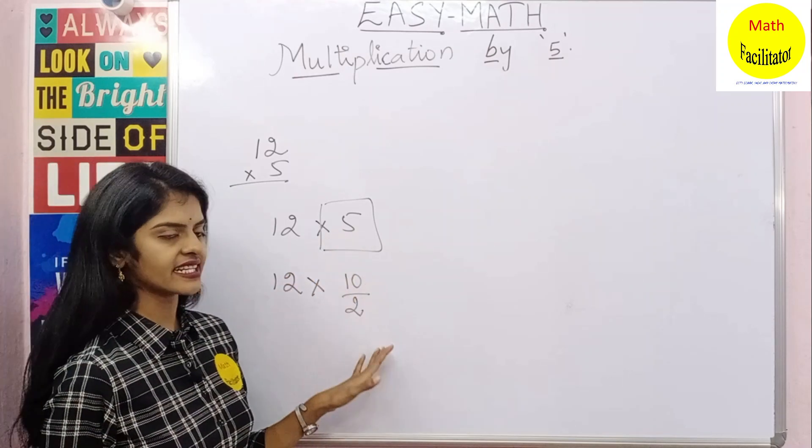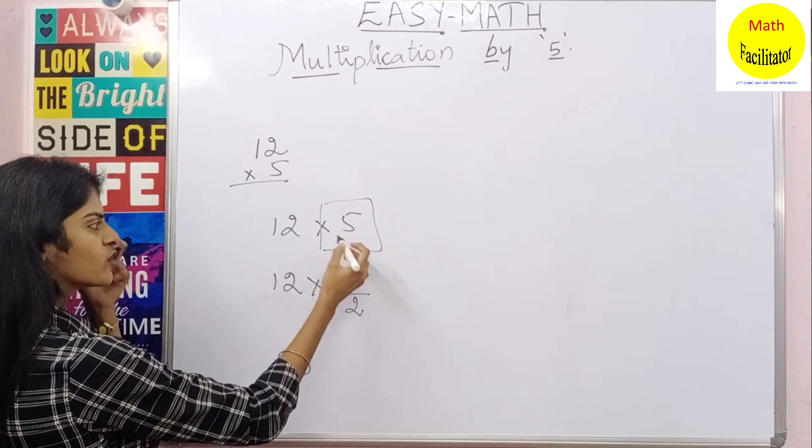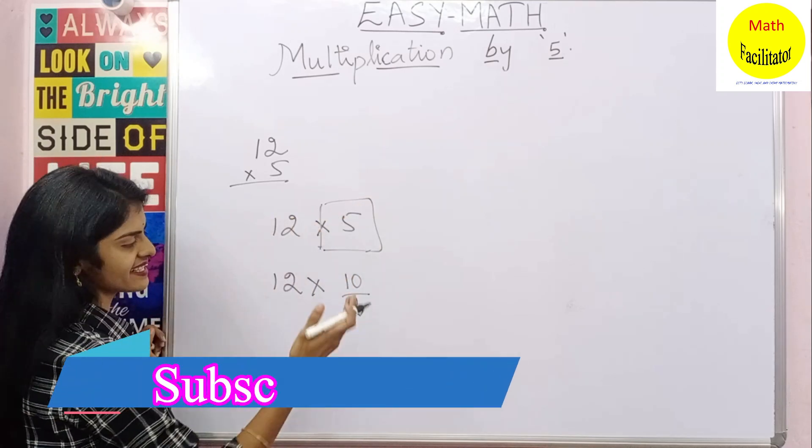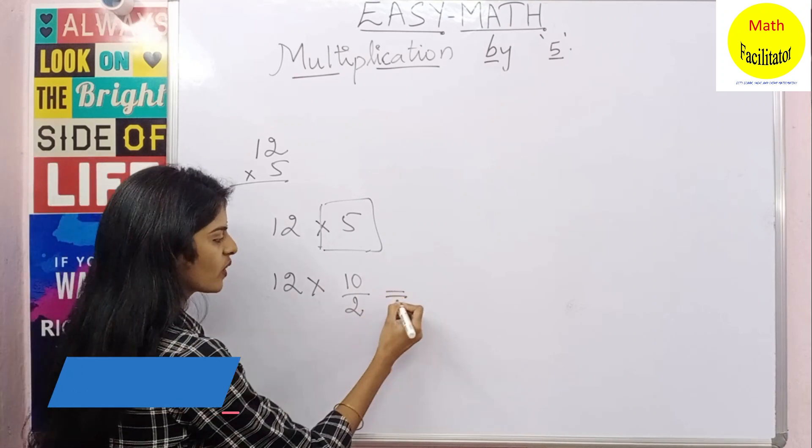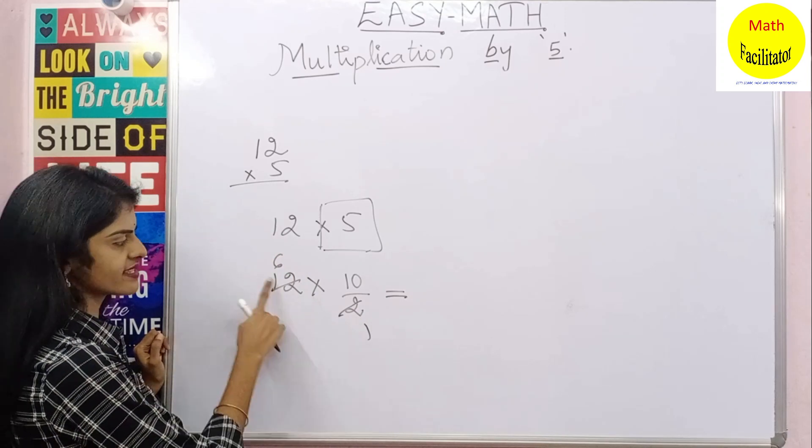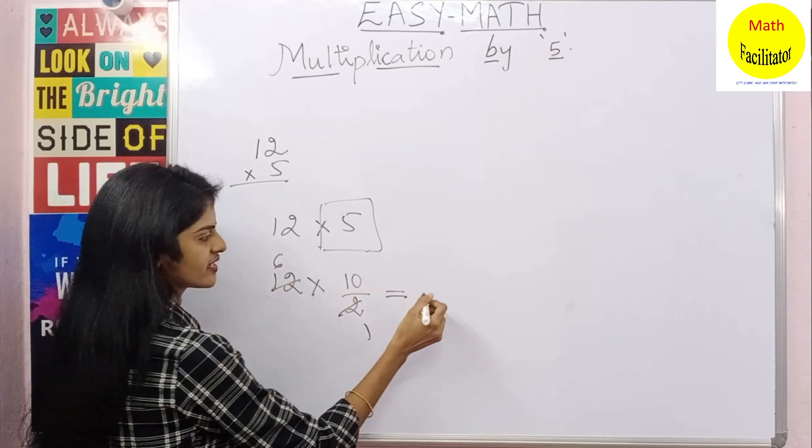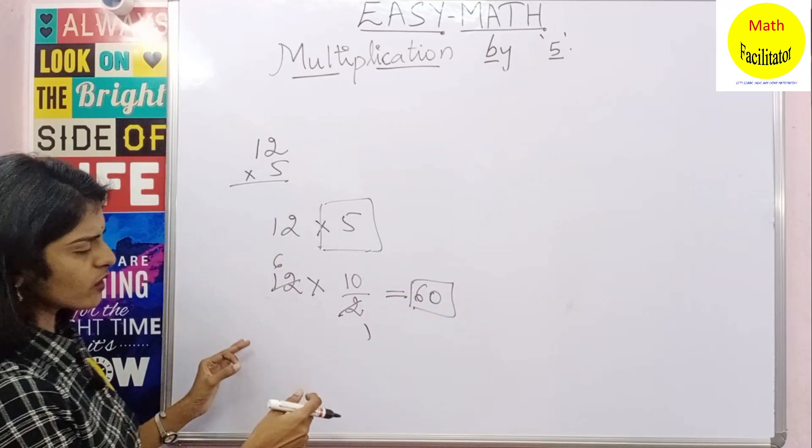Now 5 is nothing but 10 divided by 2. Yes, 2 times 5 is 10. So this 5 I am replacing as 10 by 2. Now see how easier it is. You can just solve it: 2 times 1 is 2, 6 times 2 is 12, and 6 into 10 is 60.